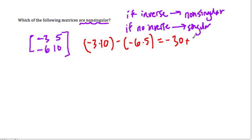Which equals negative 30 minus negative 30, so it's plus 30. And that equals 0. So this is singular, it has no inverse.